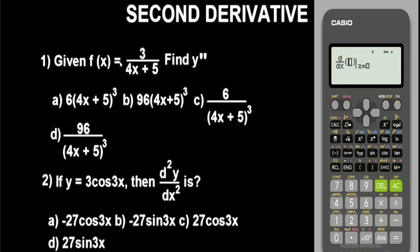We are given the function f(x) = 3/(4x + 5), and we need to find y double prime — the second derivative. So replace y double prime with d²y/dx². The function is a fraction: enter 3 over (4x + 5). Press the button for X, then plus 5. Close the brackets and substitute the stored value. Ensure the brackets are balanced — one bracket on the right and one on the left.